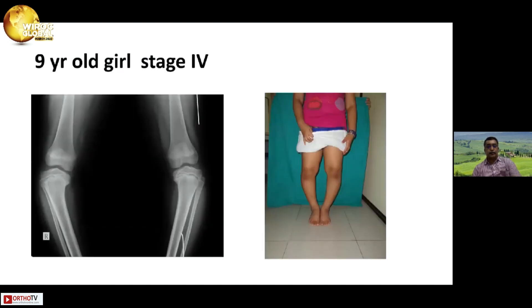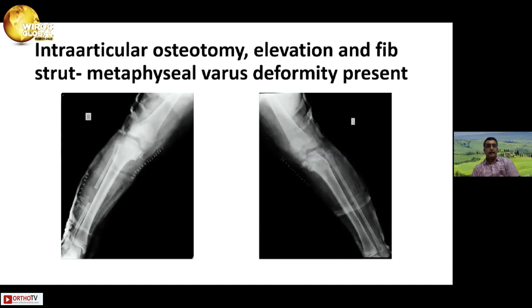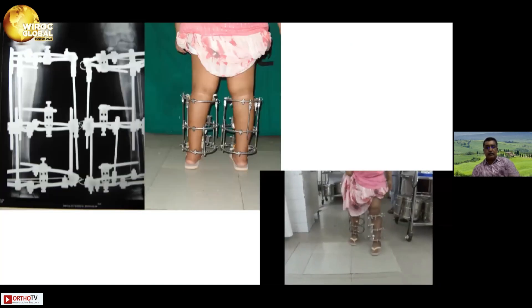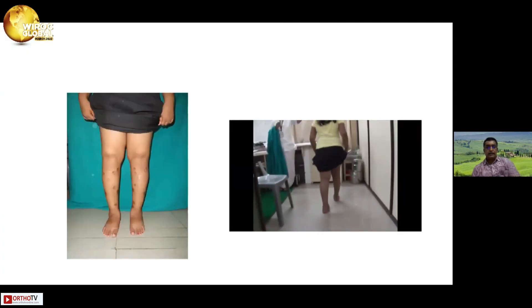This is a girl with stage 4 disease. We did an arthrogram showing medial articular depression. We performed an intra-articular osteotomy, elevation, and fibula strut grafting. The metaphyseal varus deformity was then apparent, and at stage 2 after 8 weeks, an Ilizarov frame was applied to correct the metaphyseal deformity. That is after correction, and now she is walking with the frame on. This is the end result.